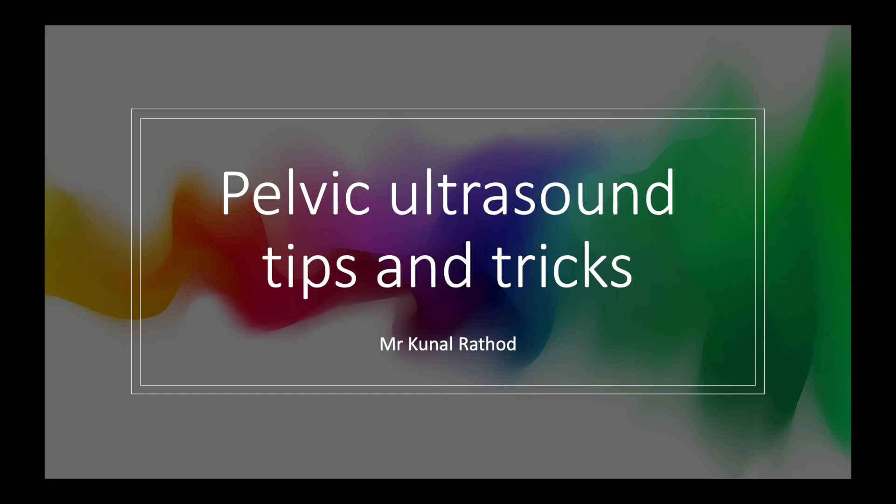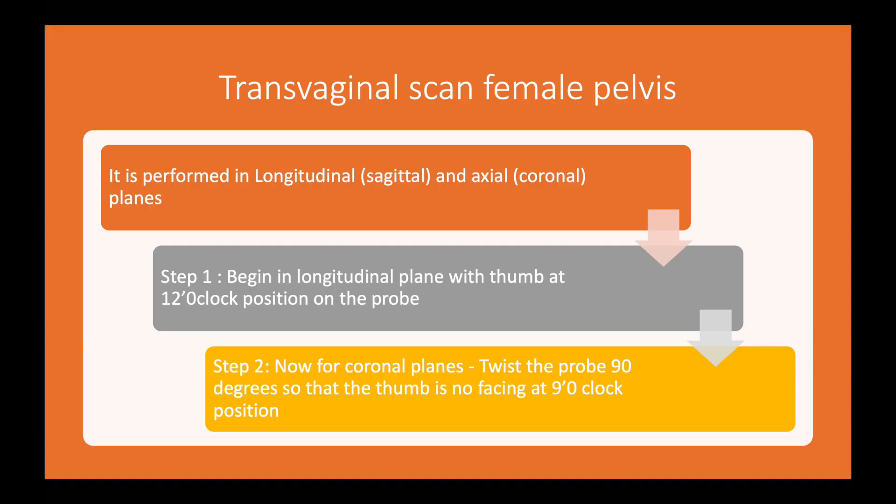This is a video presentation on pelvic ultrasound tips and tricks. It is performed in two planes. Step one is to begin in the longitudinal plane with the thumb at the 12 o'clock position, and step two is to twist the probe so that it is facing the 9 o'clock position.